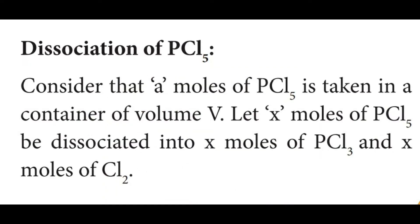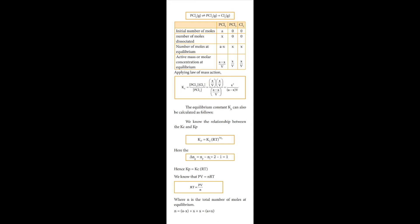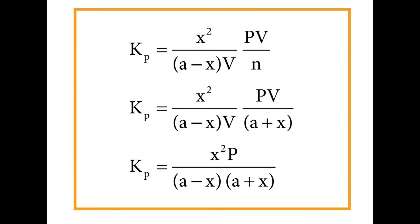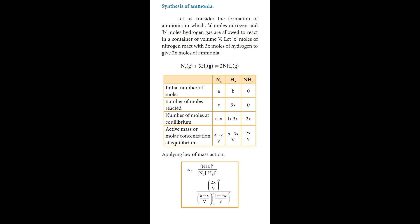Next example, dissociation of PCl5. You can see the derivation of dissociation of PCl5 where Kp and Kc are different values. And the two answers are clear. We can use Kc equals x² by (a-x) into V. That's why Kp is derived as x² by (a-x) into (a+x). We can see the two derivation values.